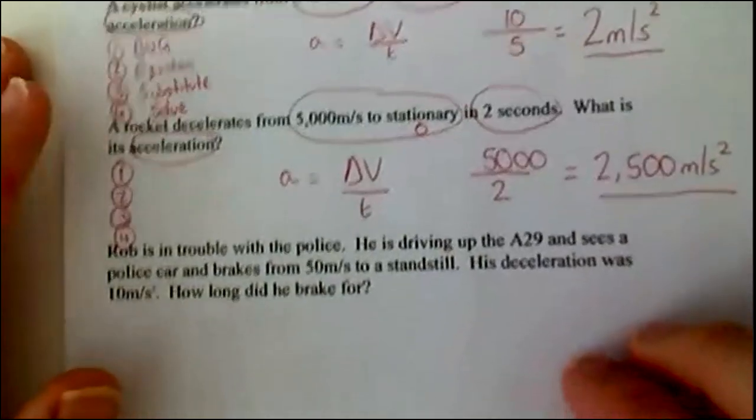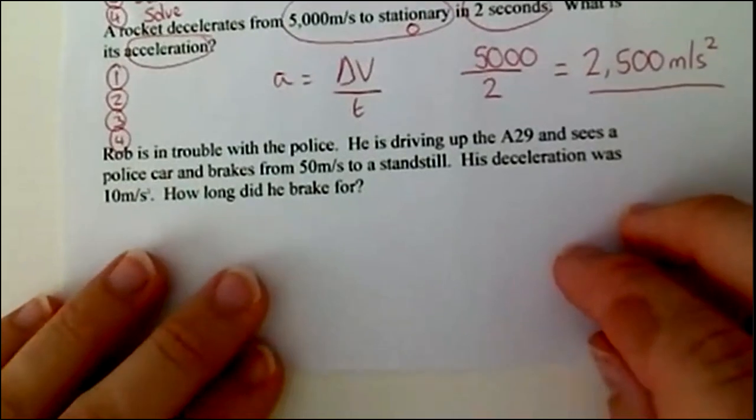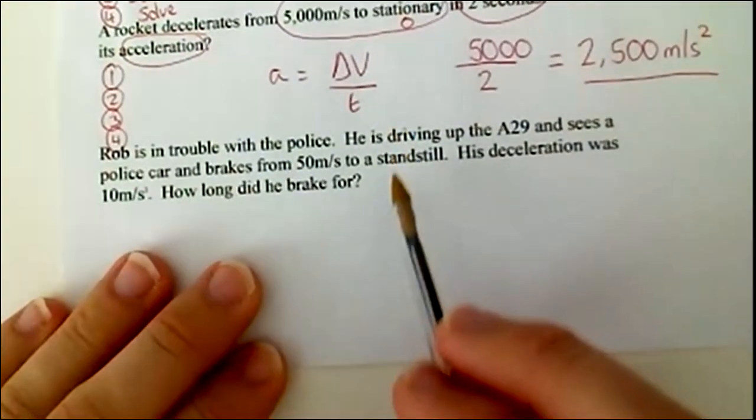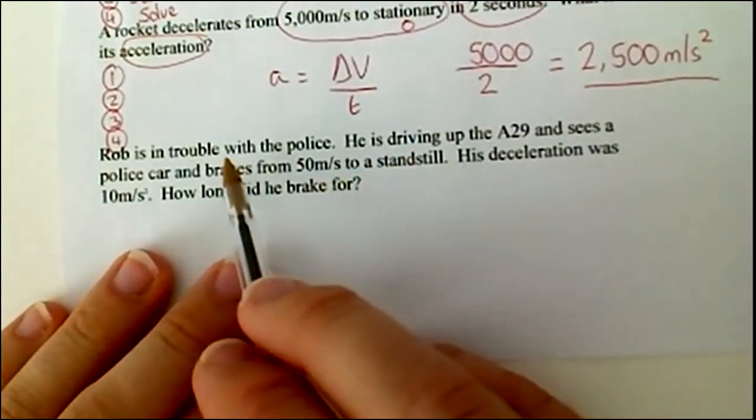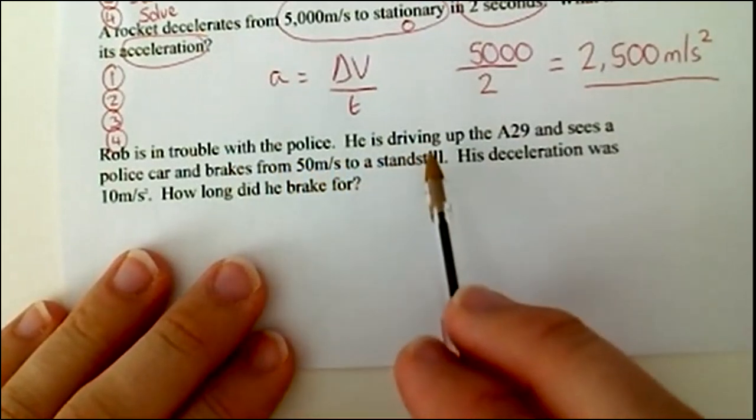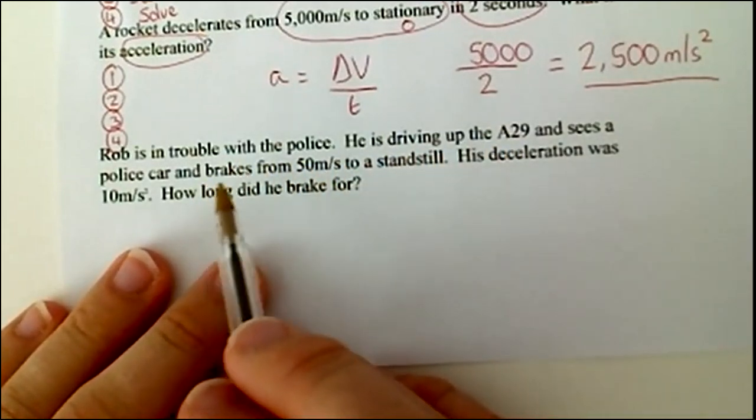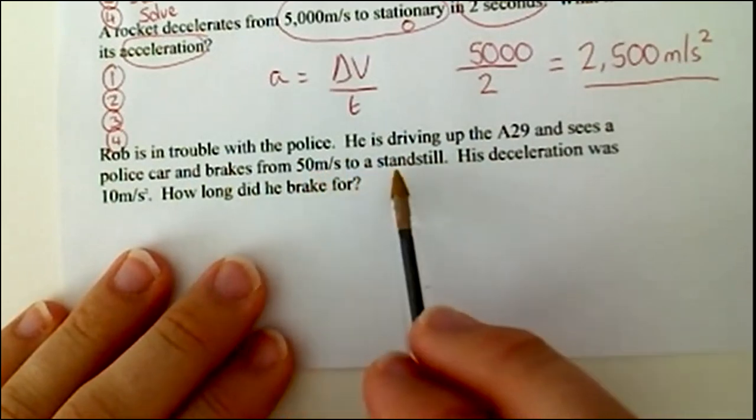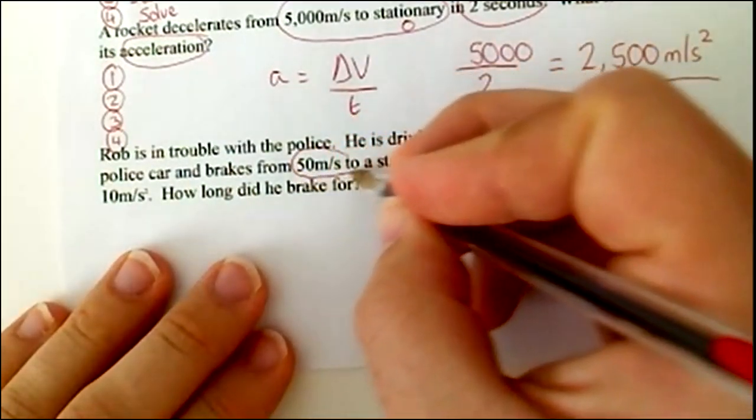The third question is again, you know, it's going to get a little bit tougher. And this time, it's a bit longer, let's read through it. Rob was in trouble with the police. He's traveling on the A29. He sees a police car, and brakes from 50 to standstill. So, again, bugging that question. Standstill, by now you know that's zero.